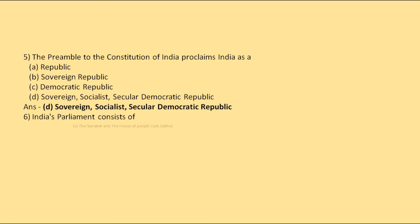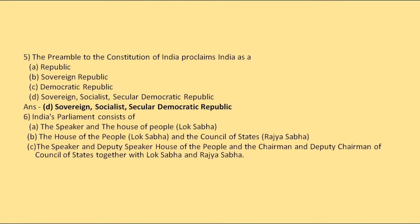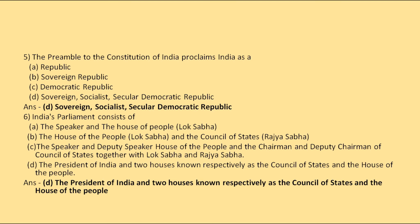Then, India's Parliament consists of: the Speaker and the House of the People (Lok Sabha), the House of the People or the Council of States (Rajya Sabha), the Speaker and Deputy Speaker of the House of the People and the Chairman and Deputy Chairman of the Council of States together with Lok Sabha and Rajya Sabha, or the President of India and two houses known as the Council of States and the House of the People? Option D is correct — Parliament of India consists of the President of India, Lok Sabha and Rajya Sabha.